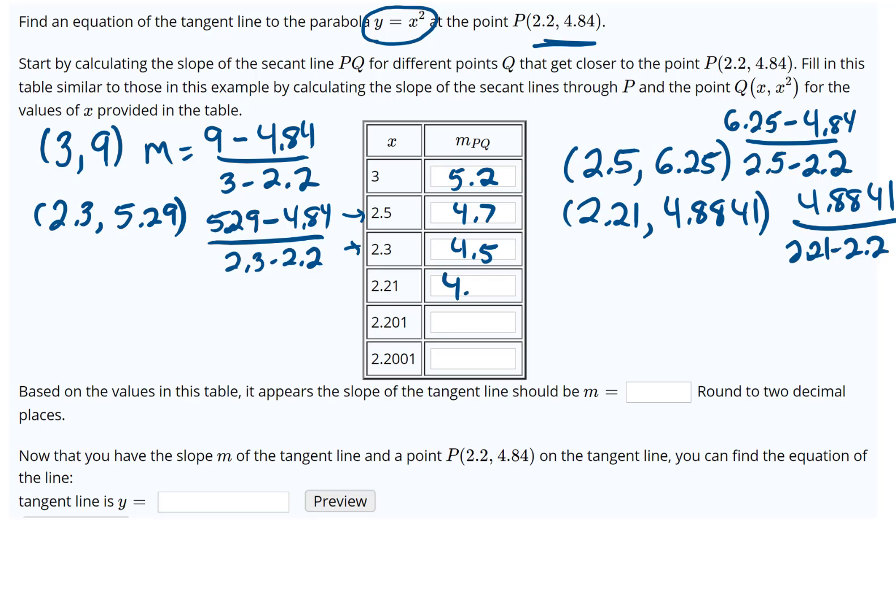Go ahead and compute that one, and we get 4.41. We're going to do the same for this value—you got the idea. Put it in there, square it, do y2 minus y1 over x2 minus x1, and it looks like that one I get 4.401.